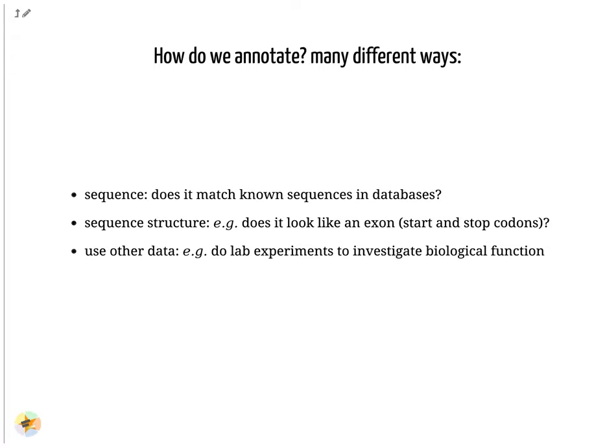Some tools annotate features on a genome by seeking motifs corresponding to known structures, for example gene or exon start or stop. Some lab experiments can help annotate specific regions of a genome, even though it is often much more expensive than automatic annotation. Lab experiments can provide certainty about function, where automatic annotation is more of a guess.